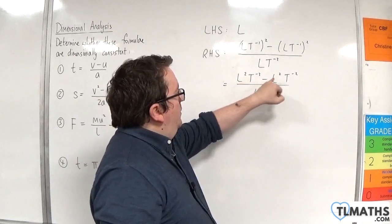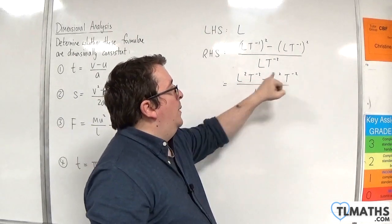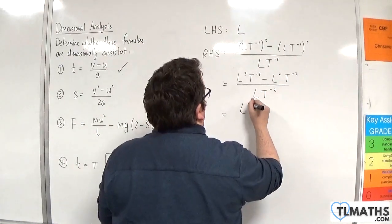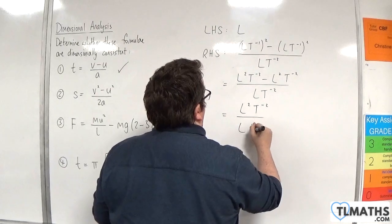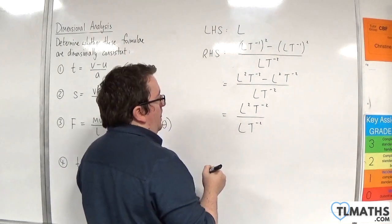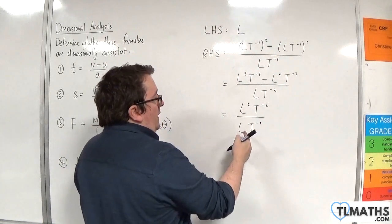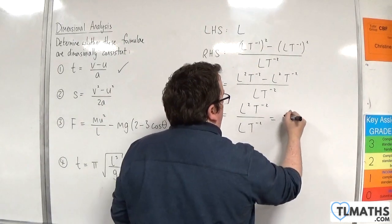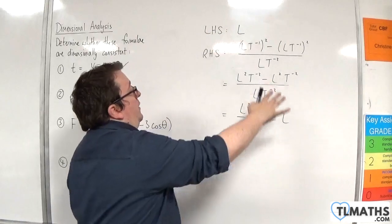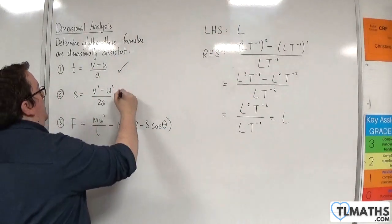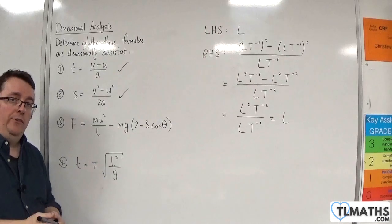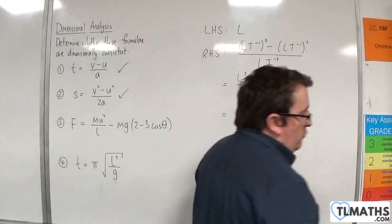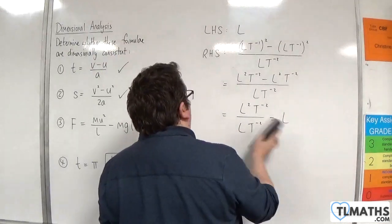We have L²T⁻² take away L²T⁻², which is still L²T⁻² — that's velocity squared — divided by the acceleration LT⁻². One of the L's cancels, and T⁻² divided by T⁻² is just 1, so that's just L. The left-hand side is L, the right-hand side is L — they're both lengths — so that is dimensionally consistent. You should recognise both of those from the constant acceleration formulae; they're just rearrangements.